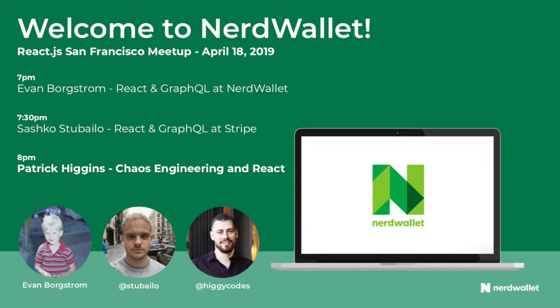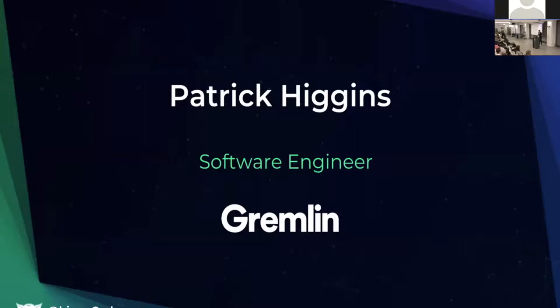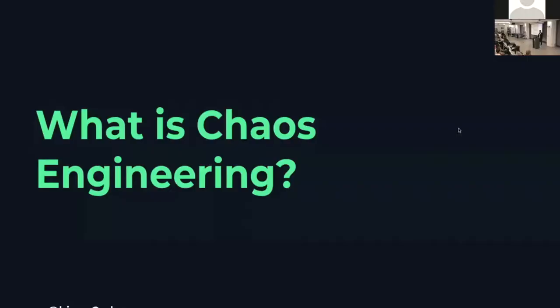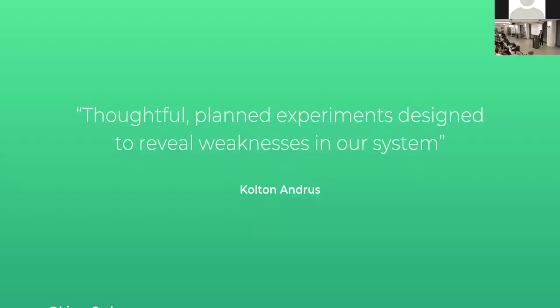My name is Patrick Higgins, I'm a software engineer at Gremlin. I got into Gremlin pretty early on — I was employee number five. We're now at 50, so we're not a huge company, but things are coming along. Today I want to talk initially about chaos engineering, then about how that may or may not affect user experiences in your UIs, and lastly about building more robust React applications with the ideas of chaos engineering in mind.